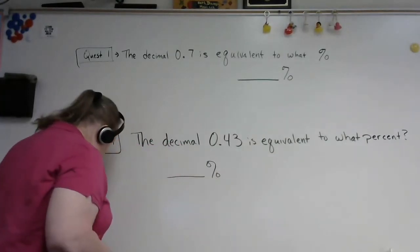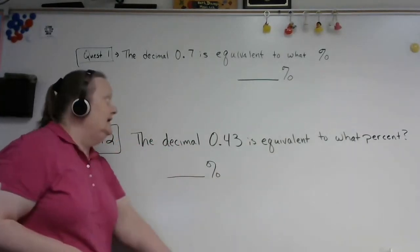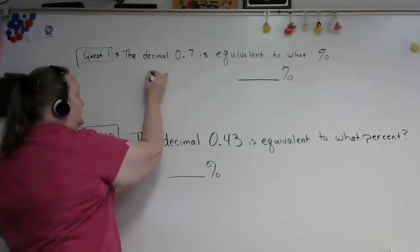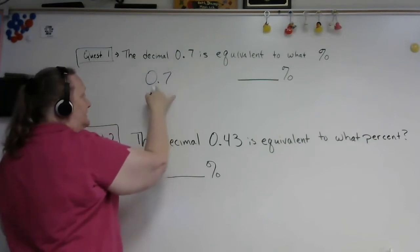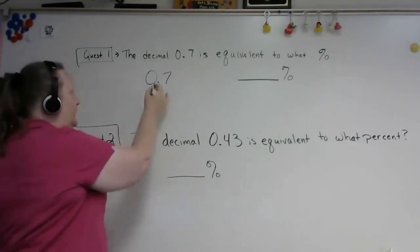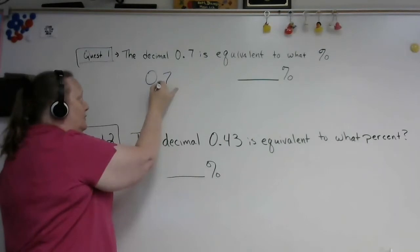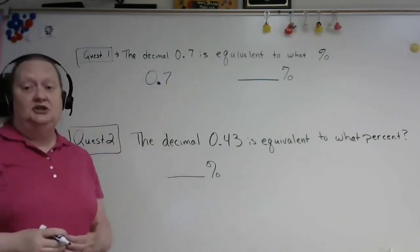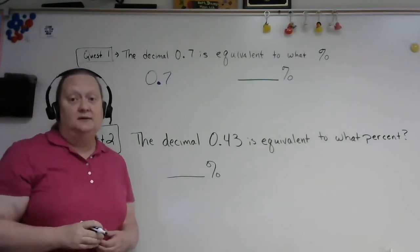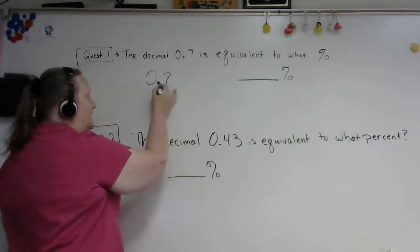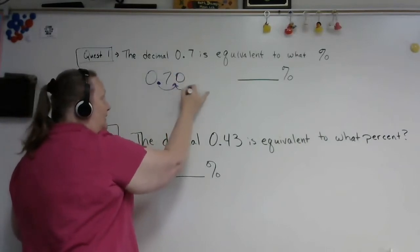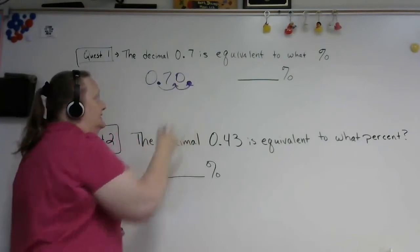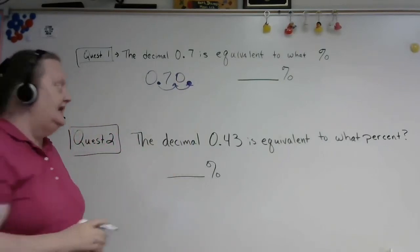So what we want to do is take the decimal that is given, which is 0.7 with the decimal place here. And remember with the decimal place that we want to move that two places to the right. And so as we move that two places to the right, notice we have one, so we'll need to add a zero to move it two places.